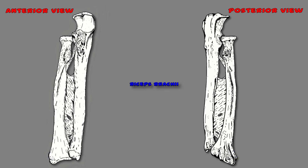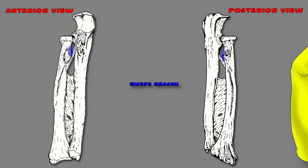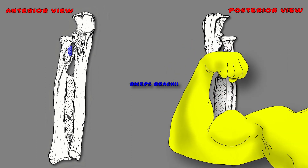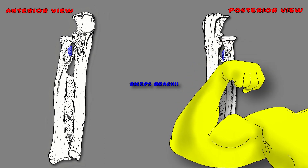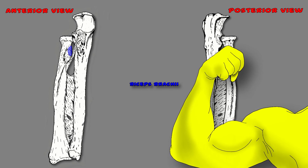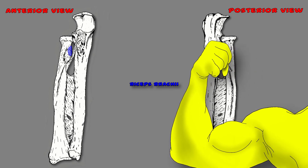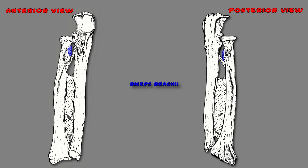Next up: the biceps — the bicep brachii to be exact. It inserts on the radial tuberosity. It's easy to remember that it inserts on the radius bone and not the ulna, because anytime you flex your biceps, the thumb — which is on the radius side — touches your shoulder, not the pinky finger. The bicep brachii inserts on the radial tuberosity.